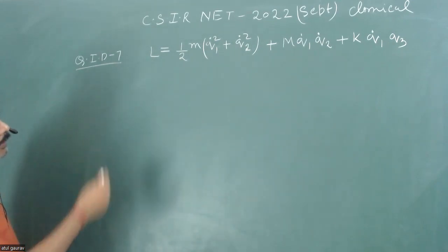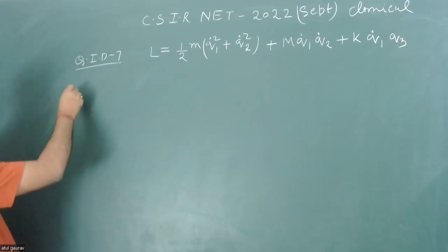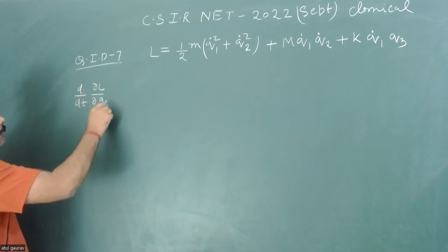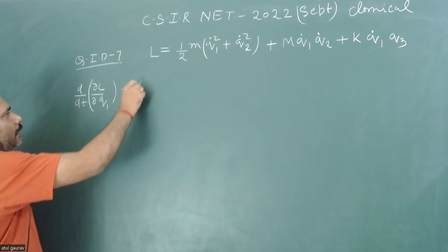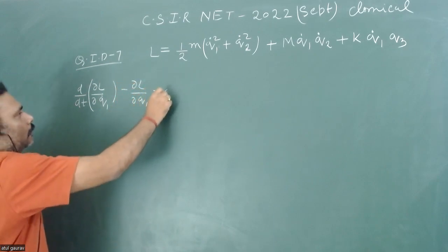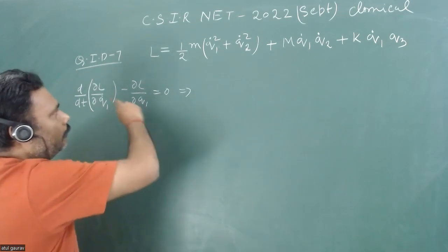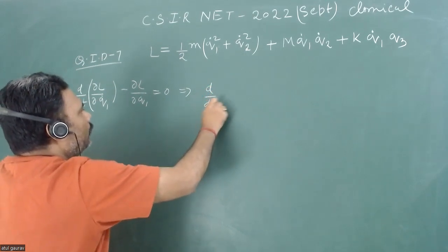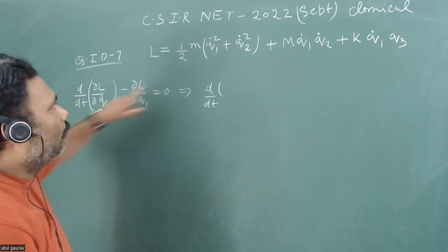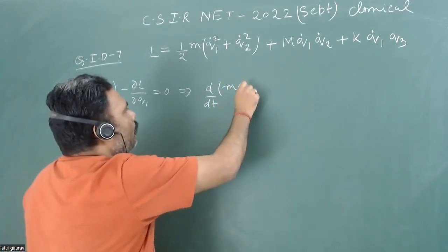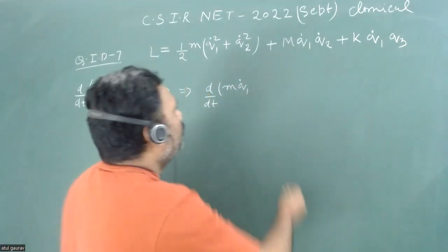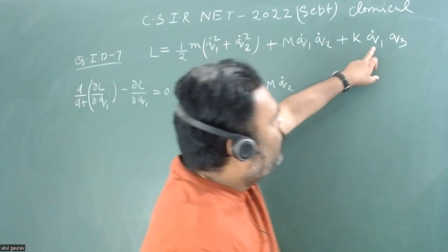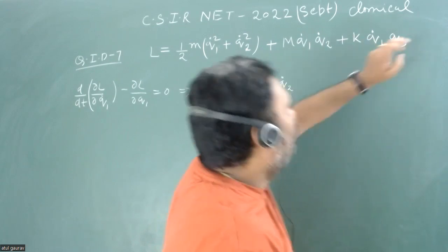Let's write the equation of motion for Q1. We apply d/dt of (∂L/∂Q1-dot) minus (∂L/∂Q1) equals zero. When we differentiate with respect to Q1-dot, we get m·Q1-dot, and Q2-dot will survive giving M·Q2-dot. Then differentiating the last term, Q1-dot differentiates and Q3 survives, giving K·Q3.